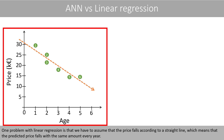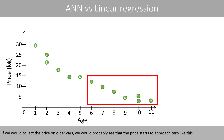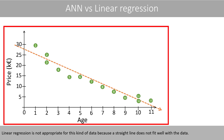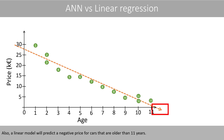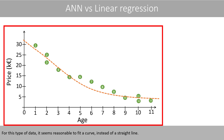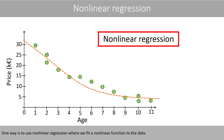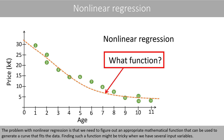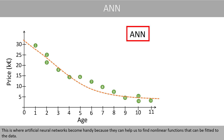One problem with linear regression is that we have to assume that the price falls according to a straight line, which means that the predicted price falls with the same amount every year. If we would collect the price on older cars, we would probably see that the price starts to approach zero. Linear regression is not appropriate for this kind of data, and a linear model will predict a negative price for cars older than 11 years. One way is to use nonlinear regression, but the problem is that we need to figure out an appropriate mathematical function to fit the data, which can be tricky when we have several input variables. This is where artificial neural networks become handy because they can help us find nonlinear functions that can be fitted to the data.